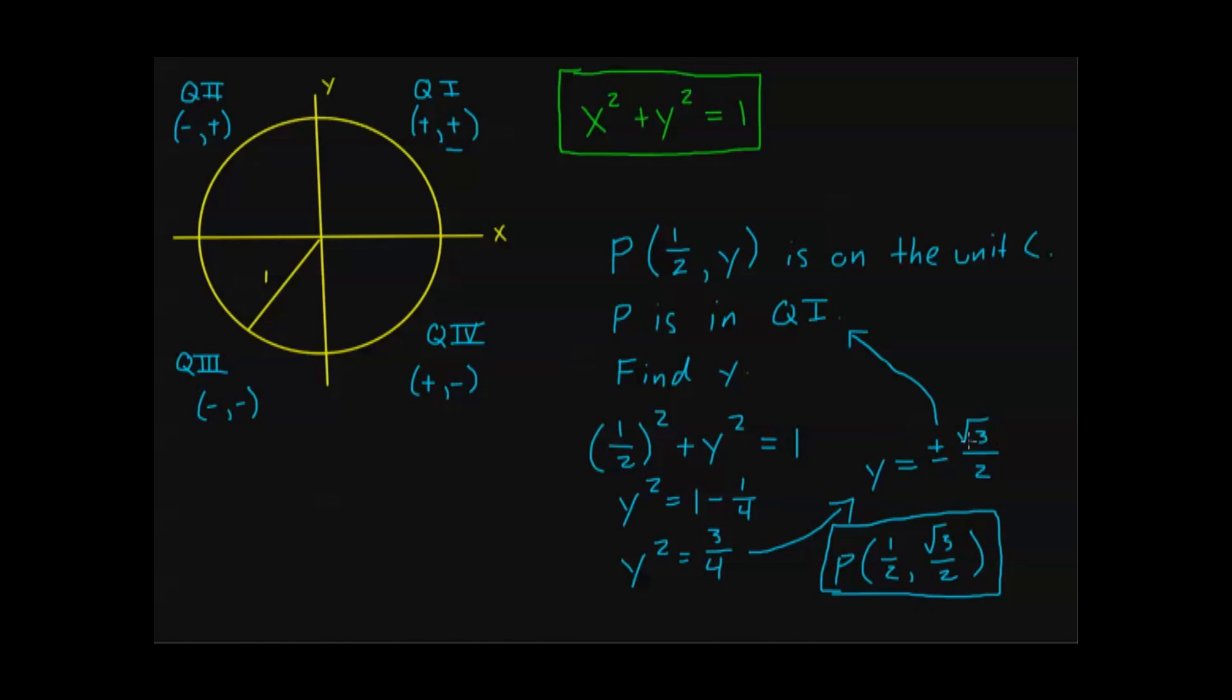You might be asking, well, what about this negative square root of three over two? Why is that even an option? What does that mean? Well, if I didn't have this restriction, p is in quadrant one, there is another point on the unit circle that has the quadrants, and I'll denote that point as q.